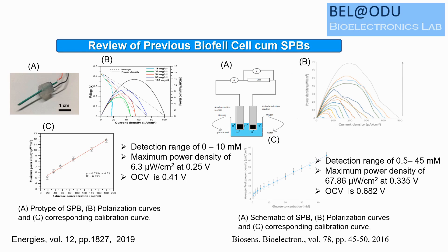Reviewing previous biofuel cell self-powered biosensors: one work published in Energies used platinum iridium on a carbon electrode as anode and carbon cloth as cathode. The fabricated SPB detected glucose in the range of 0 to 10 mM with a maximum power density of 6.3 microwatts per cm² at 0 to 0.5 V, and an open circuit voltage of 0.41 V. The linearity was fine but power density was poor.